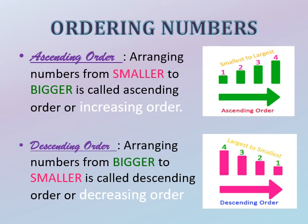Now comes ordering numbers — a very interesting topic. There are two ordering systems: ascending order and descending order. Ascending order means arranging numbers from smaller to bigger, also called increasing order, starting from the smallest and ending at the largest. Descending order means arranging numbers from bigger to smaller, also called decreasing order, starting from the biggest and ending at the smallest.